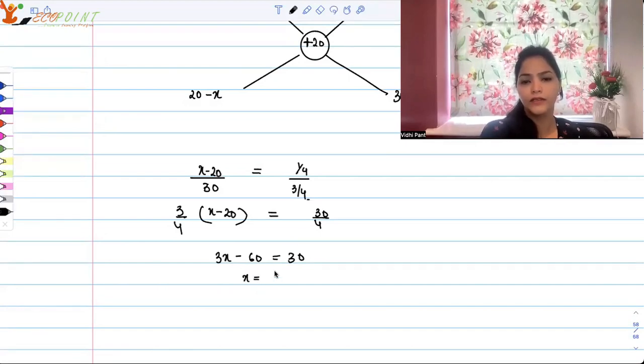In other words, X is equal to 90 upon 3. That is 30. So 30% is the profit.